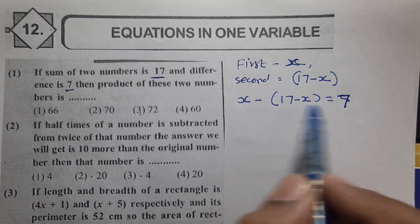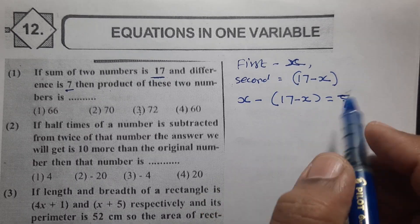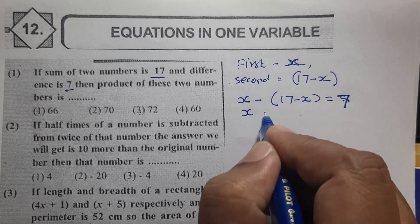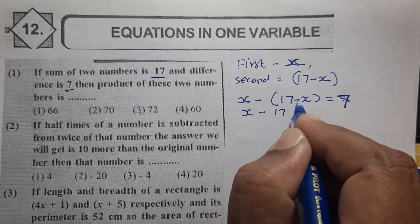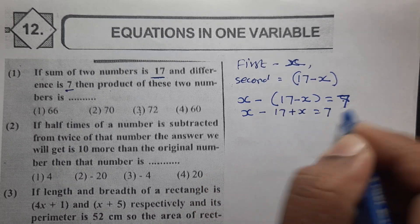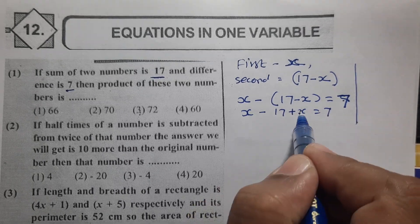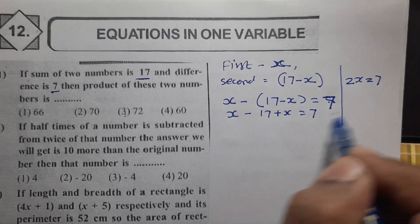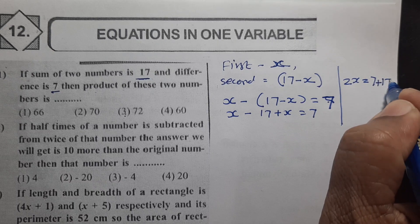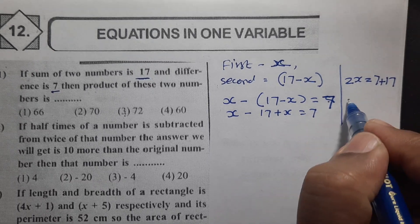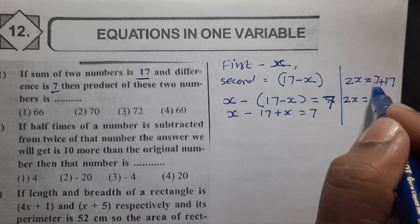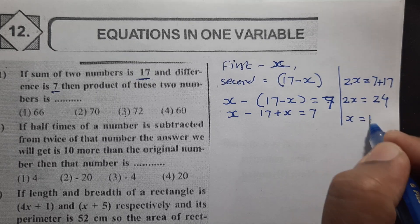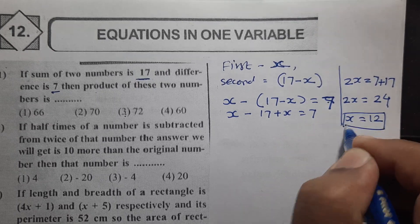The negative sign changes, so x minus 17 plus x equals 7. Simplifying: 2x equals 7 plus 17, which is 24. Therefore x equals 24 divided by 2, which is 12.